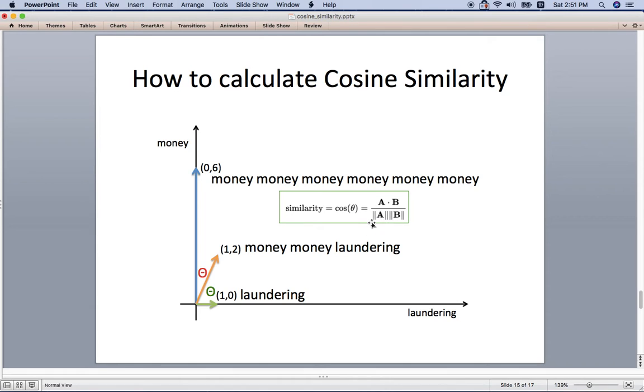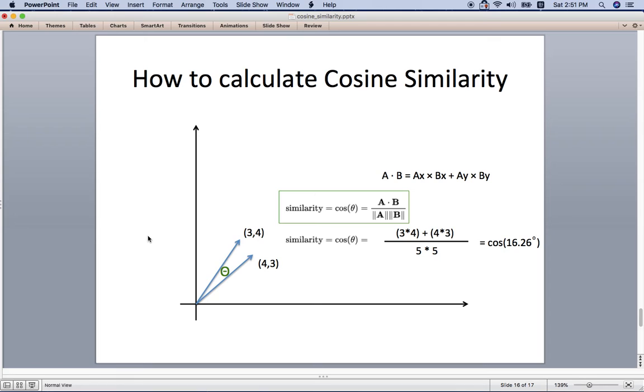To get the similarity, you can just use the cosine similarity equation. Cosine theta is A·B dot product over the length of A times the length of B. You can easily calculate with this example. If we have vector (3,4) and (4,3), you can easily get the similarity, and the cosine is like 16.26 degrees.